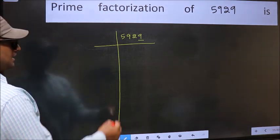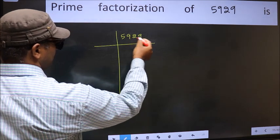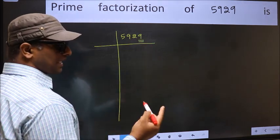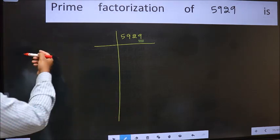Last digit is neither 0 nor 5, so this is not divisible by 5. Next Prime Number 7. Let us check divisibility by 7 here.